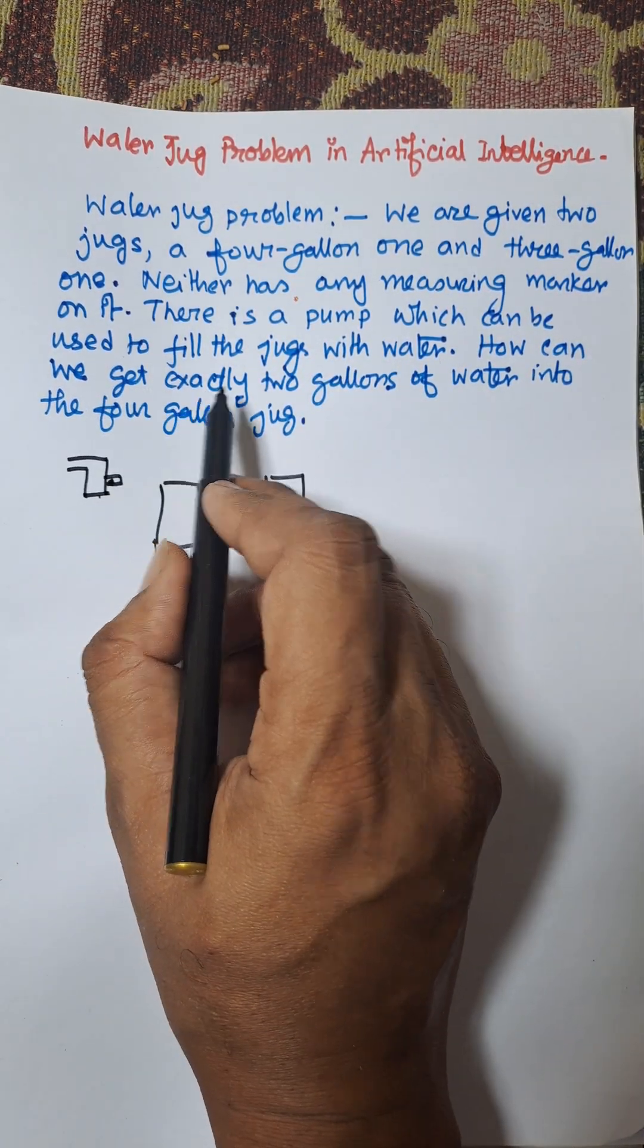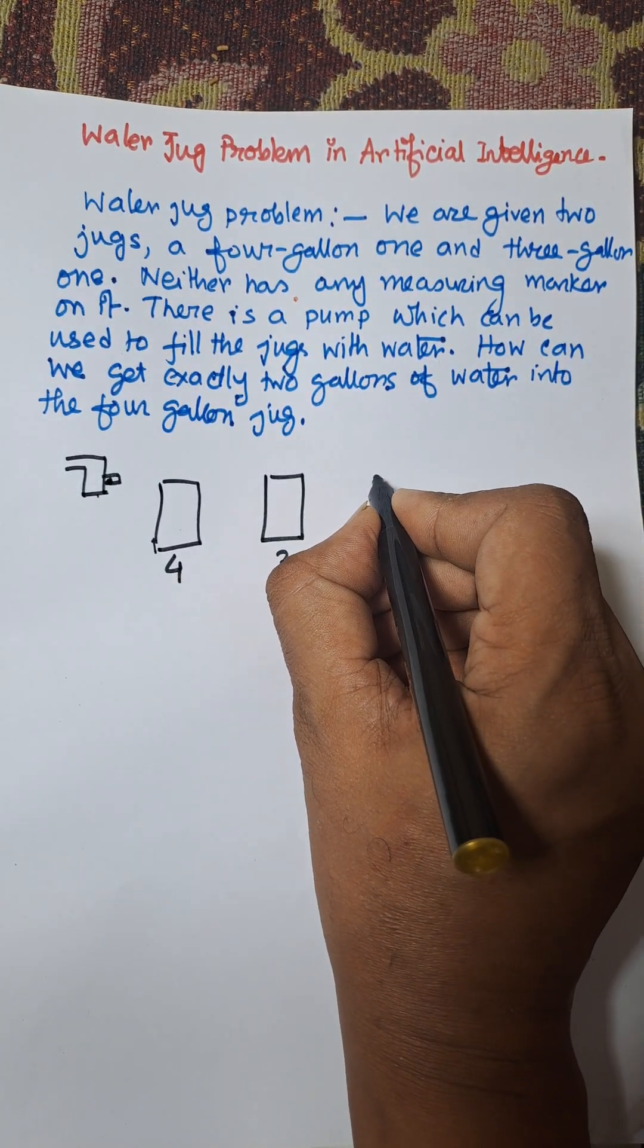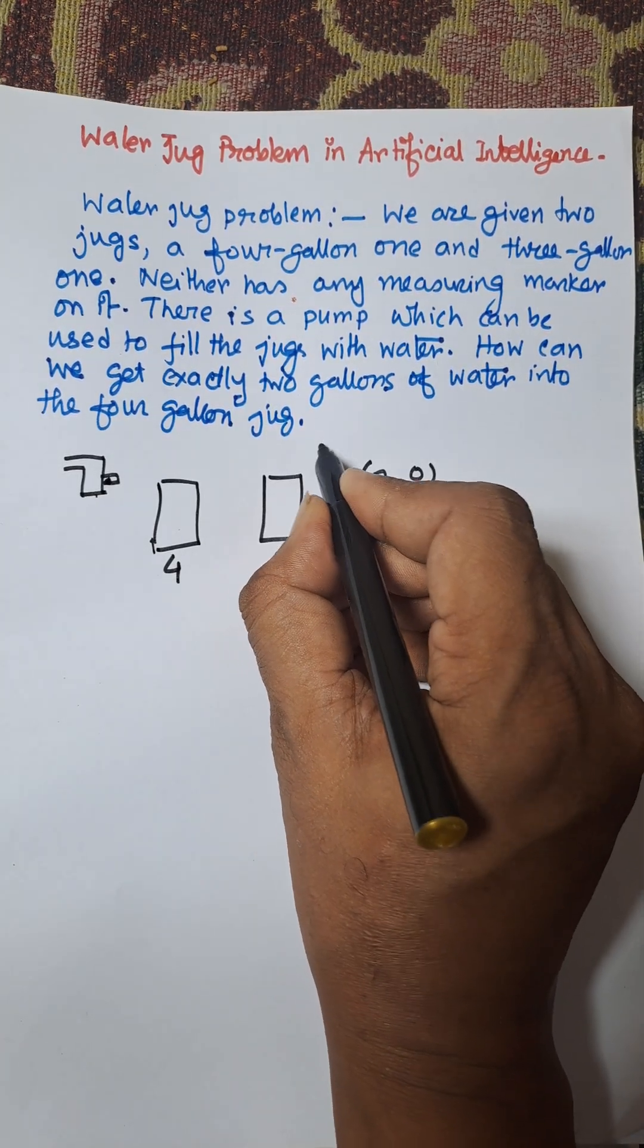How can we get exactly two gallons of water? The initial state is 0,0.